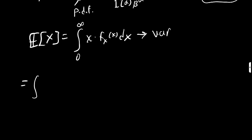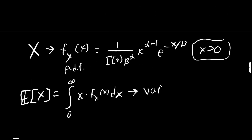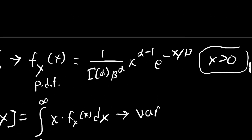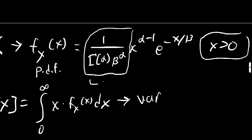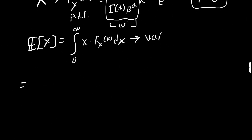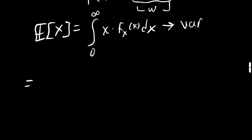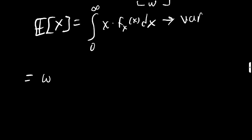This is going to be the integral from 0 to infinity. The constant out front — 1 over gamma of alpha times beta to the alpha — I'm going to call omega. So it will really be omega times the integral from 0 to infinity of x times x to the alpha minus 1 times e to the negative x over beta, dx.